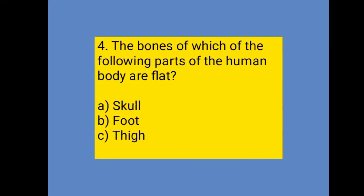Moving to our fourth question — fourth question is on your screen. The bones of which of the following parts of the human body are flat? Option A: skull. Option B: foot. Option C: thigh.